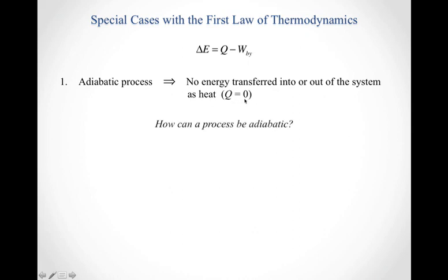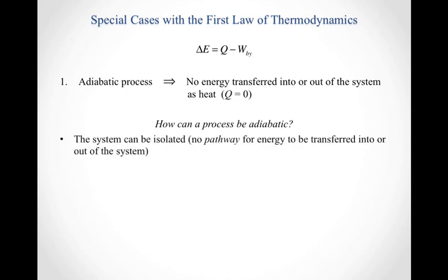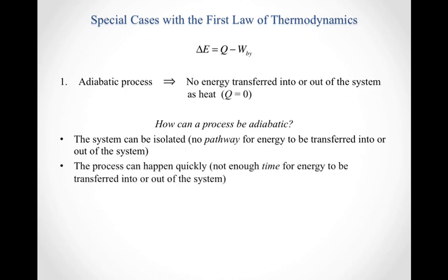Q equals zero. So the first question is, how can a process be adiabatic? There are two ways to make a process adiabatic. The first is to isolate the system, meaning there's no pathway available for energy to be transferred into or out of the system as heat. The second is the process can happen quickly — when it happens quickly, there's not enough time for energy to be transferred as heat. You eliminate the two things necessary: a pathway and time.